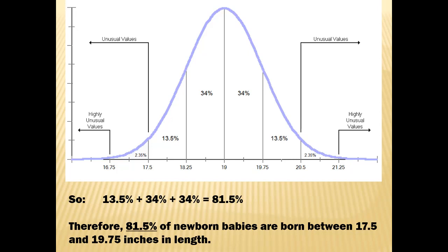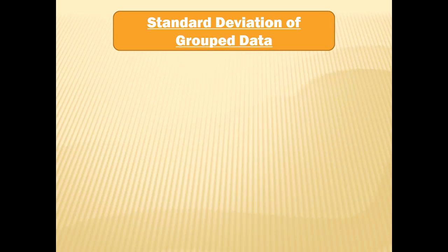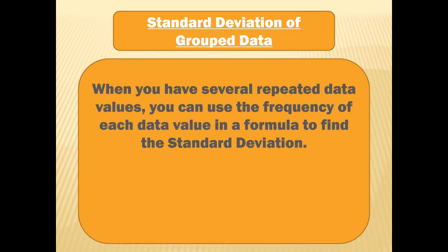We can also talk about the standard deviation of grouped data. When you have several repeated data values, you can use the frequency of each data value in a formula to find the standard deviation more efficiently. Instead of computing the same deviation multiple times, you find the deviation once, square it once, and multiply by the frequency. The formula is: s equals the square root of the sum of (x minus x-bar) squared times its frequency f, divided by n minus 1.